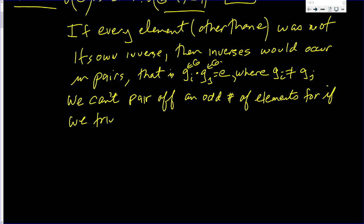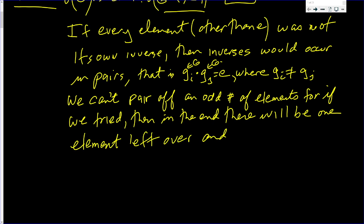If we tried, then in the end, there will be one element left over, and it would have to be its own inverse. And that is all we were asked to show: that there's an element in the group that is its own inverse.